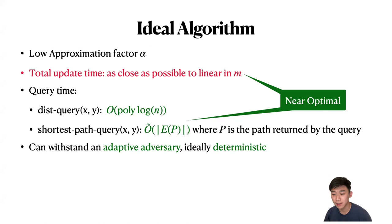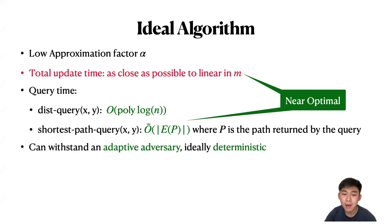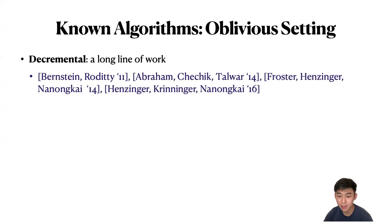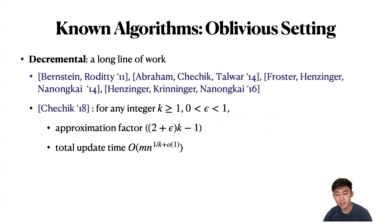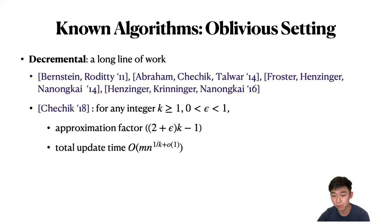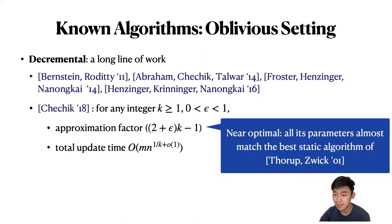There are many works done for dynamic APSP under various settings. For example, there are works in the low approximation regime where total update time is sacrificed to achieve low approximation factors, but that is not the focus of our paper. Fixing the requirement that the algorithm achieves near optimal total update time: in the oblivious decremental setting, this line of work culminated with Chechik in 2018, who gave an algorithm that achieves approximation factor (2k-1)(1+epsilon) and total update time O(m^{1/k + o(1)}), nearly matching the best static algorithm of Thorpe and Zwick. This was slightly improved by Lacki and Nazari in 2020.